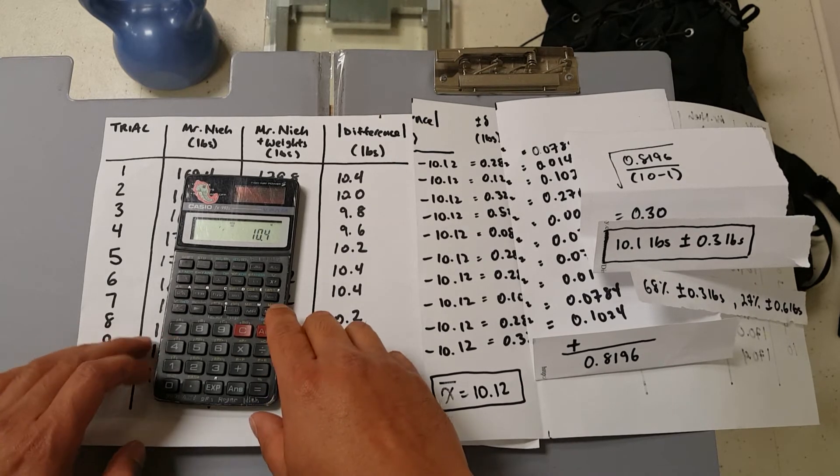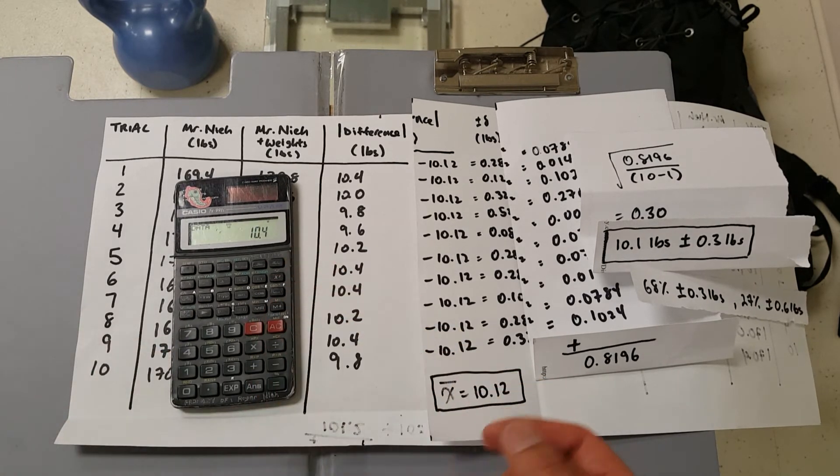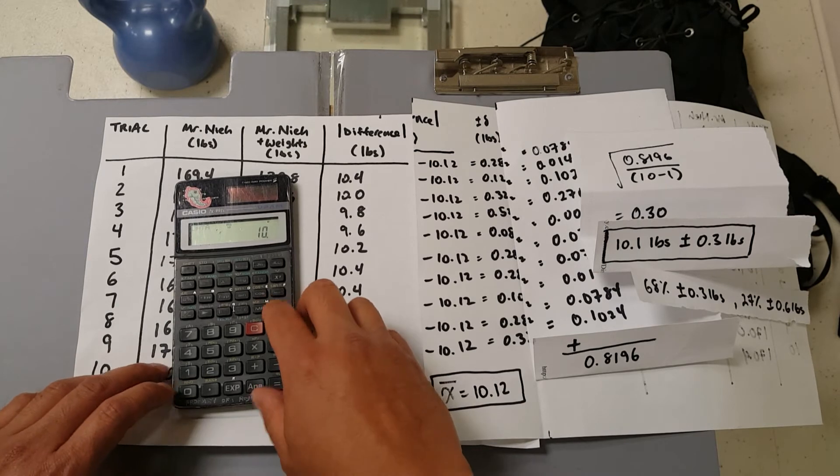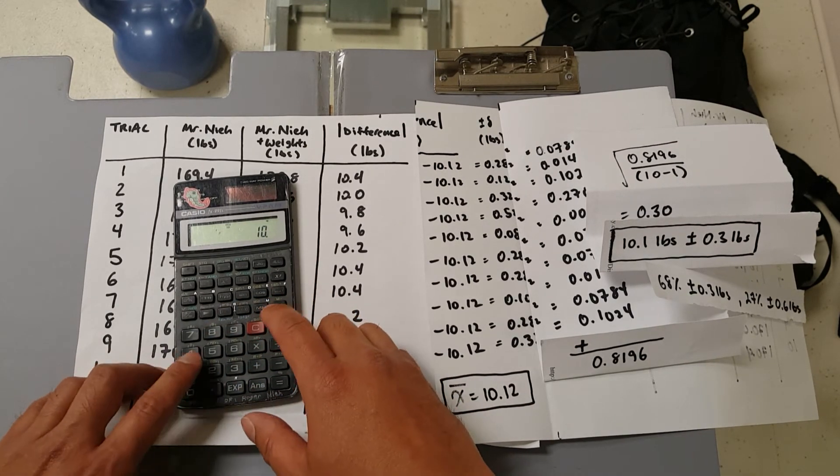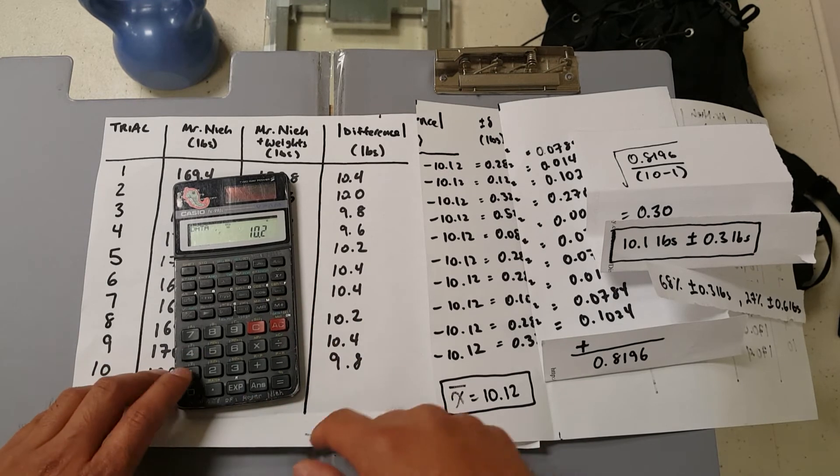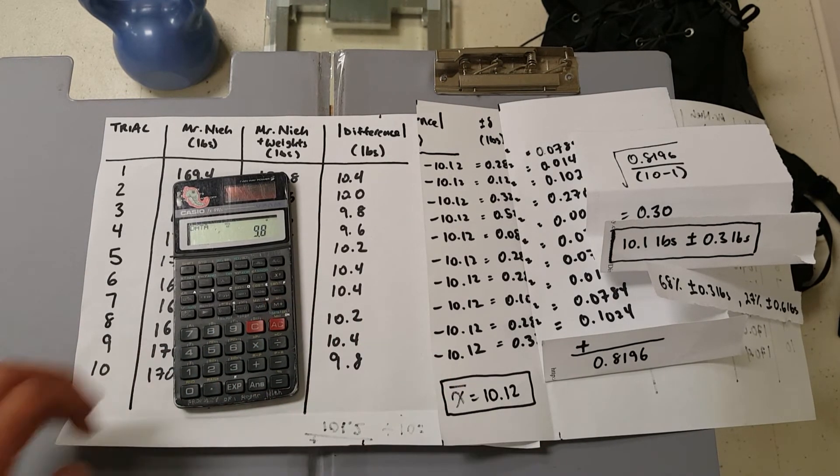Next thing you're going to do is that you're going to enter in all these data points over here. So 10.4. You'll see data meaning to memorize it. 10.0, 9.8, 9.6, 10.2, 10.4, 10.4, 10.2, 10.4, 9.8. And it's all memorized.